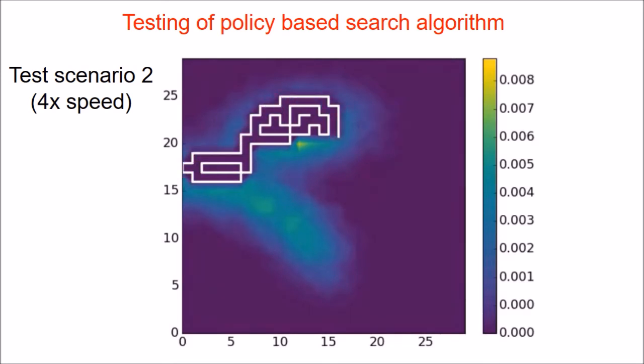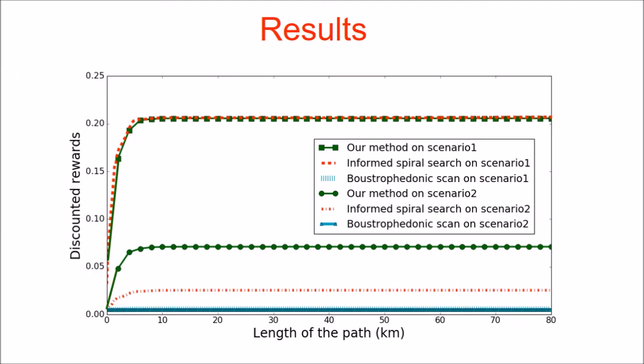We compare the paths generated by our algorithm with other accepted spatial coverage techniques such as distribution-independent boustrophedonic coverage and model-dependent spiral search. Our method outperforms both spiral and boustrophedon search techniques in total discount rewards on the second test scenario by a significant margin.